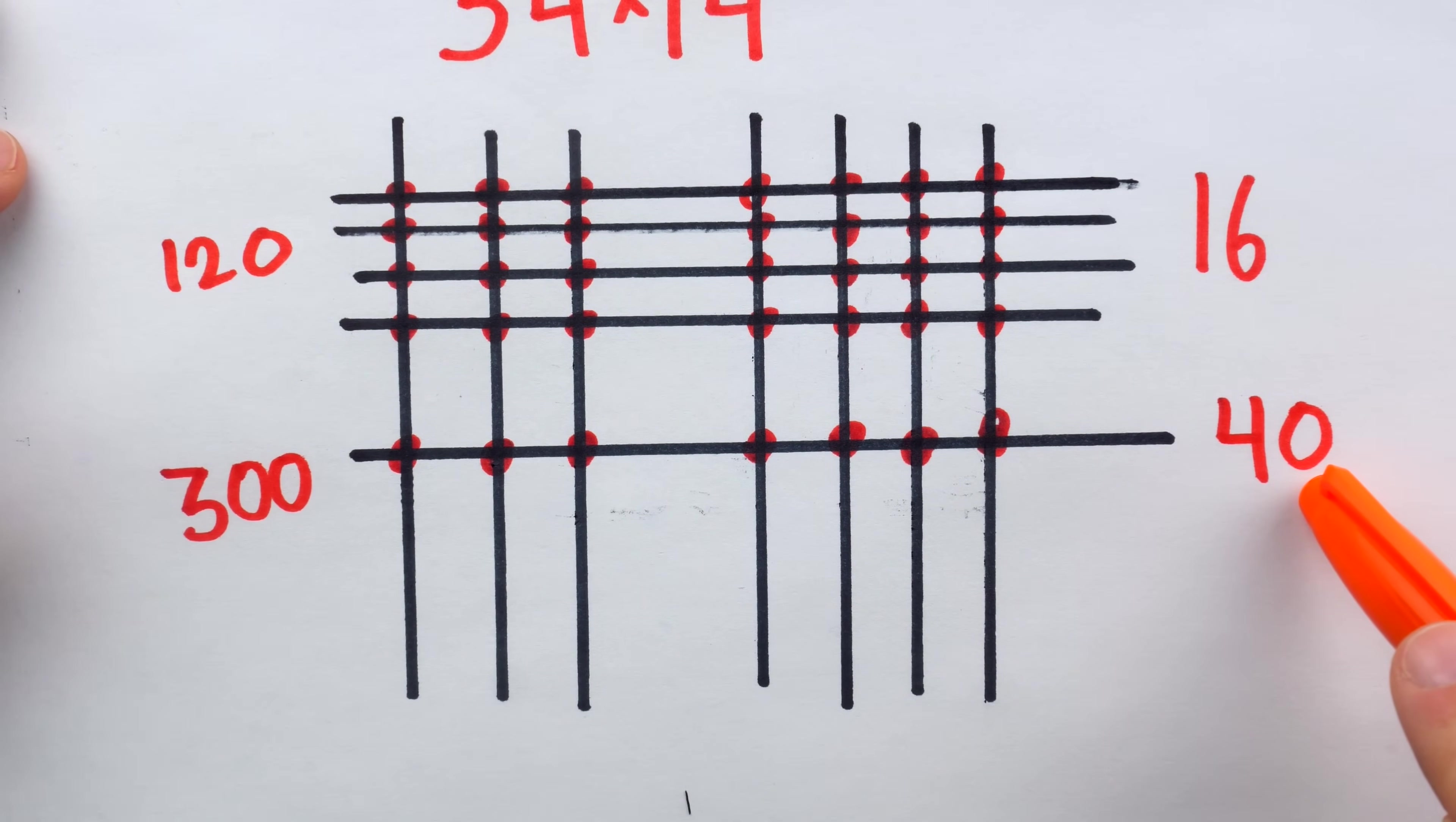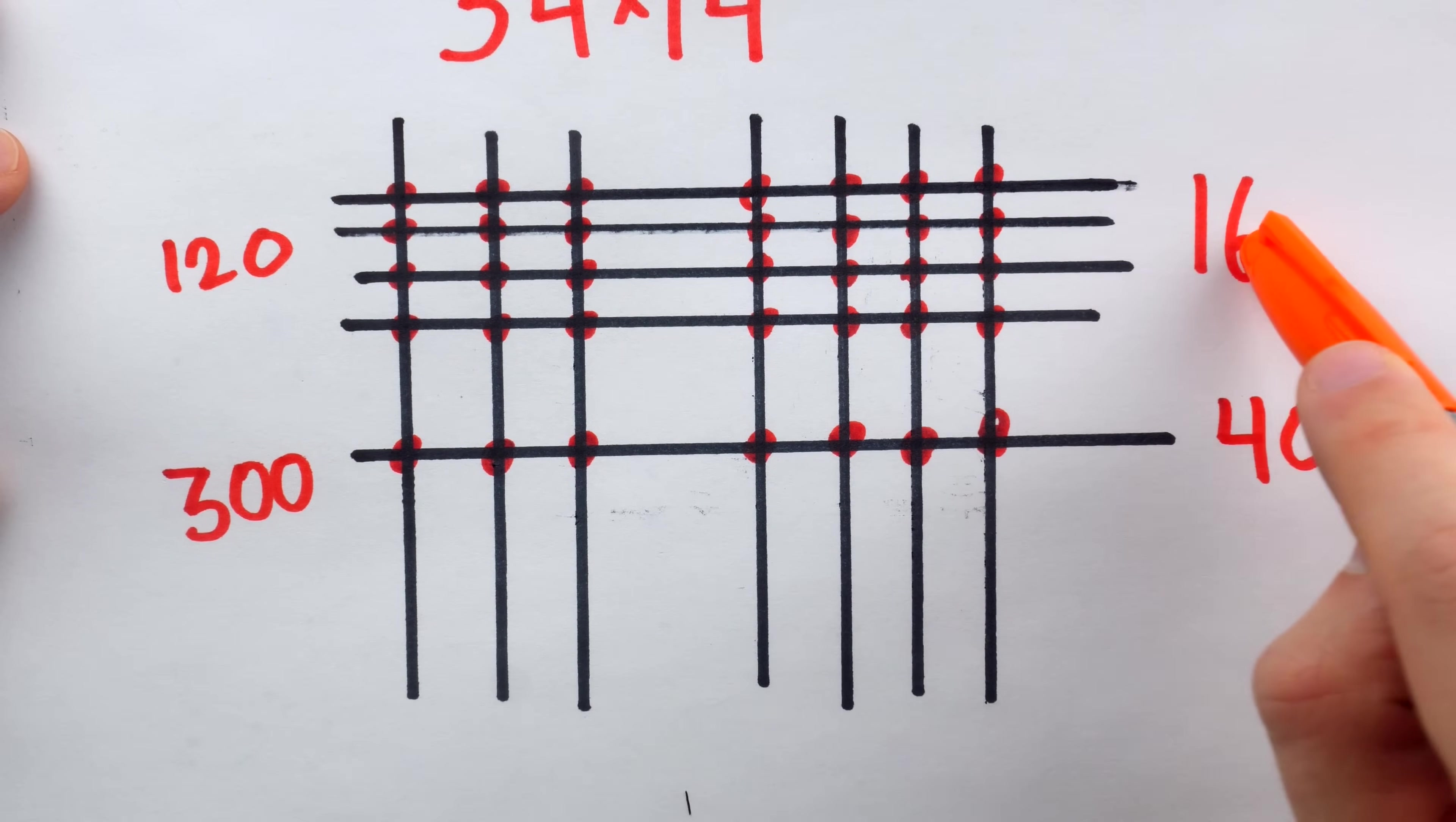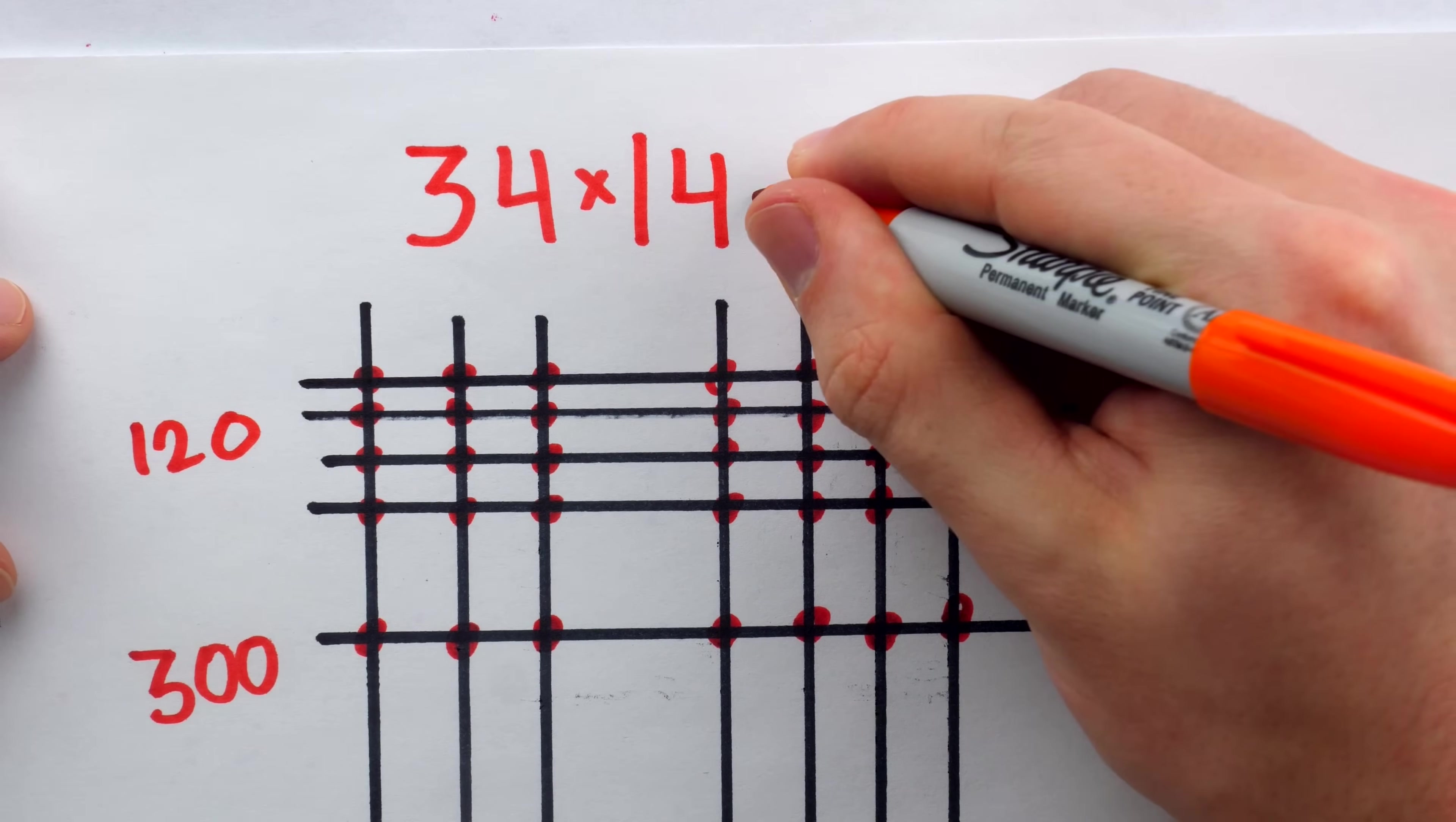And then we add everything together. 120 plus 40 is 160. Add that to 300, it's 460. Add that to 16, it's 476.